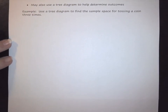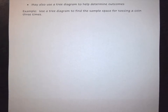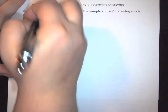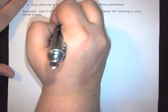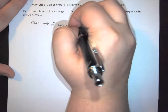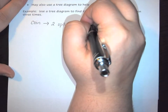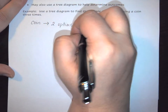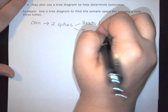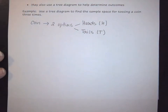The other method we can use to create a sample space is a tree diagram. For example, if I want to find the sample space for tossing a coin three times, I first recognize that any coin has two options: heads (H) and tails (T).